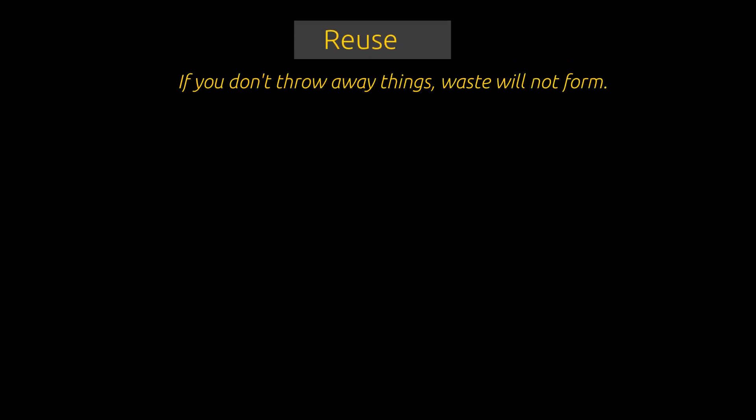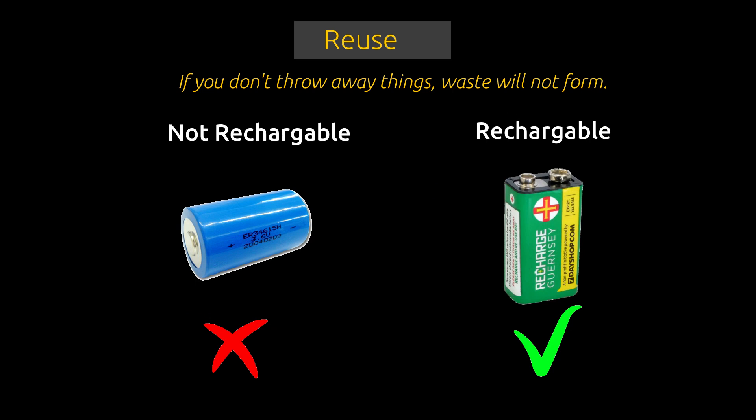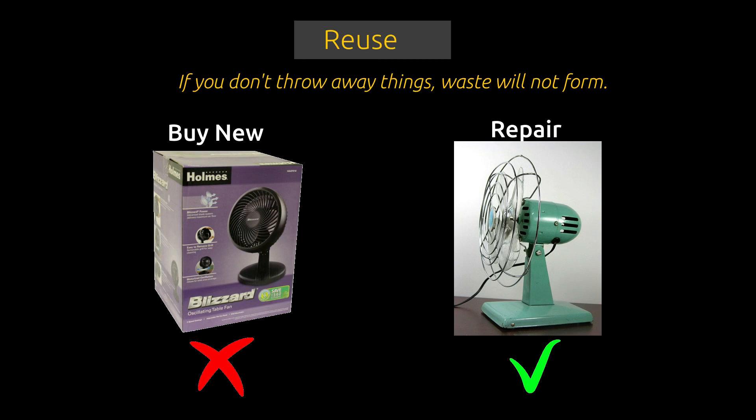If you don't throw away things, waste will not form. Using the same thing again will lead to waste reduction. Buying ink instead of a new refill is an example of reuse — the same refill is reused. Instead of buying new batteries, we should use rechargeable batteries. We can always repair machines and reuse them instead of throwing them away.